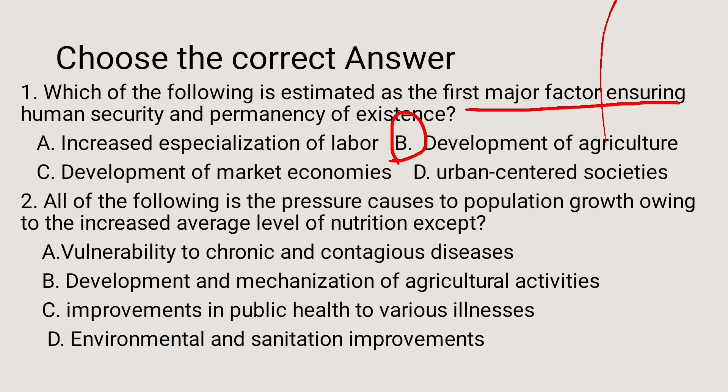Question number 2. All of the following are pressures caused on population growth owing to the increased average level of nutrition, except: A. Vulnerability to chronic and contagious diseases. B. Development and mechanization of agricultural activities. C. Improvements in public health to various illnesses. D. Environmental and sanitation improvements.